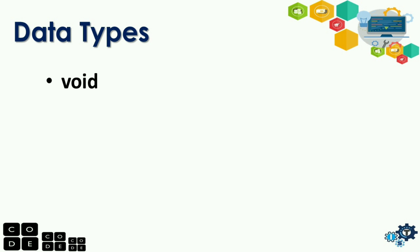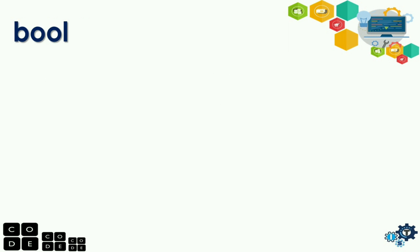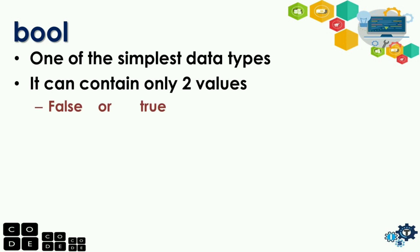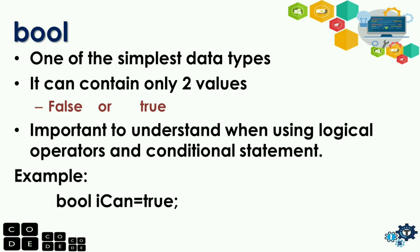These are the commonly used data types: void, bool, byte, char, int, float or double, and string. Let's discuss the most commonly used. Number one, we have bool — one of the simplest data types. It can contain only two values: true or false. It is important to understand when using logical operators and conditional statements, which will be discussed in later videos. Example: 'bool isOn = true;' — the value can only be true or false.